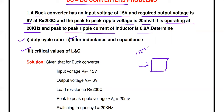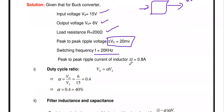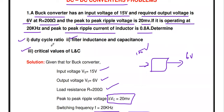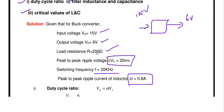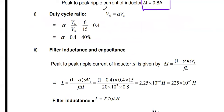For the buck converter, given data: Vs = 15V, V0 = 6V, R = 200 Ω, ΔVc = 20 mV, F = 20 kHz, ΔI = 0.8 A. First, find the duty cycle. For a buck converter, V0 = α × Vs. Rearranging: α = V0 / Vs = 6 / 15 = 0.4.